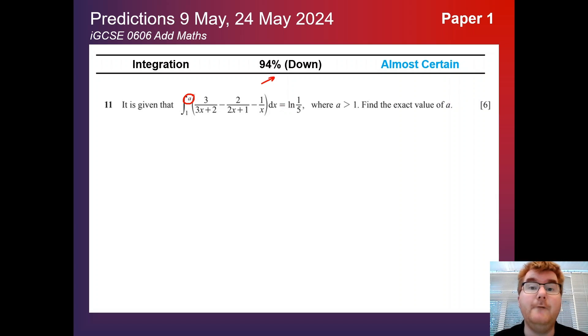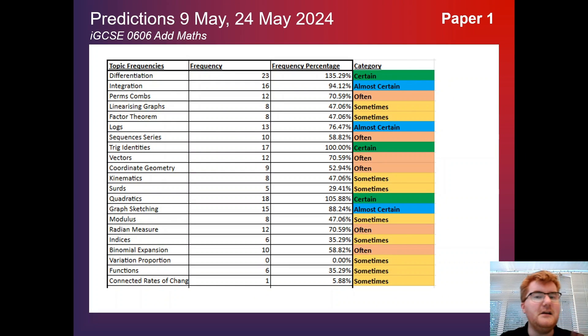A summary of the last 17 papers is here in front of you, so you can see how often these topics come up. Be aware vectors has sneaked up to 71%, so that's coming up a bit more often. I haven't mentioned it in this video, but something certainly to be aware of. Even things like sequences and series and coordinate geometry appear 50% of the time, so you need to make sure you are revising those topics as well.